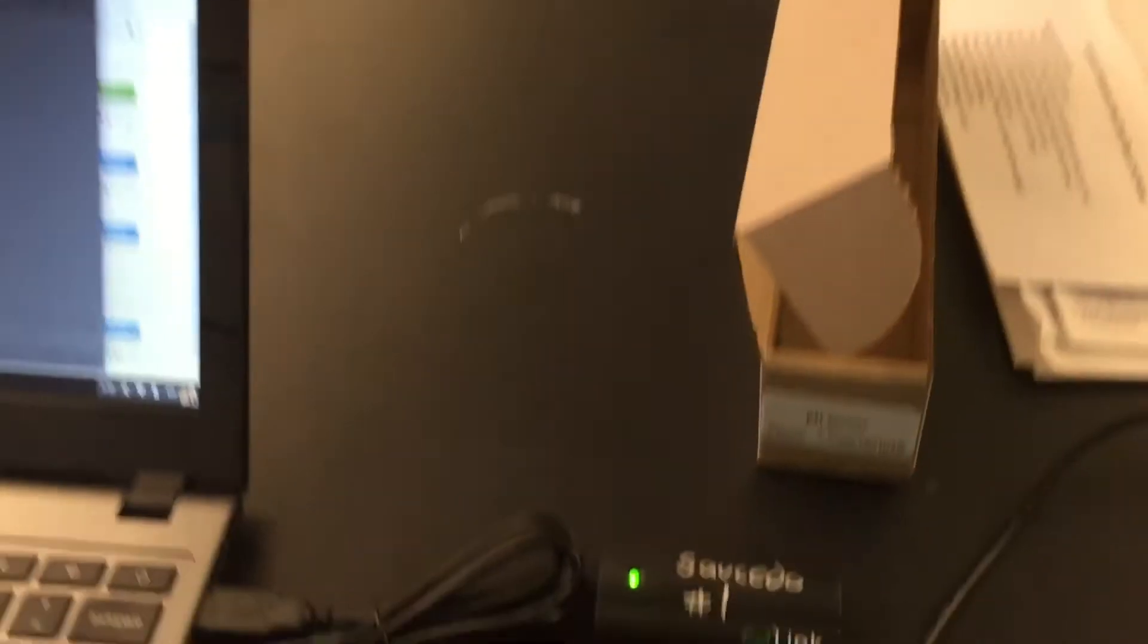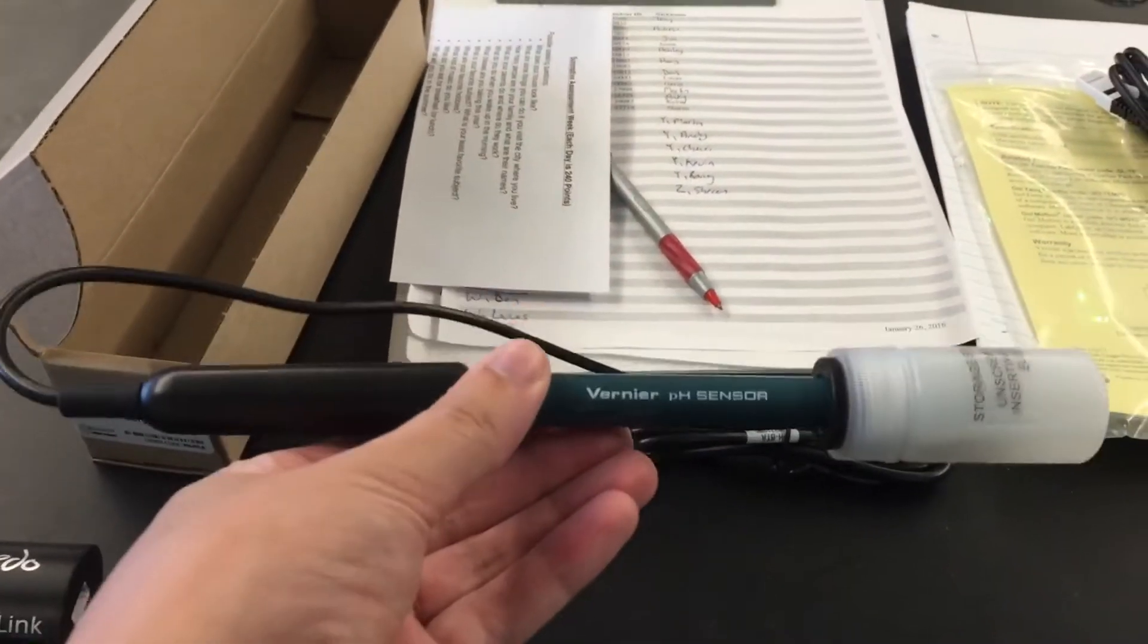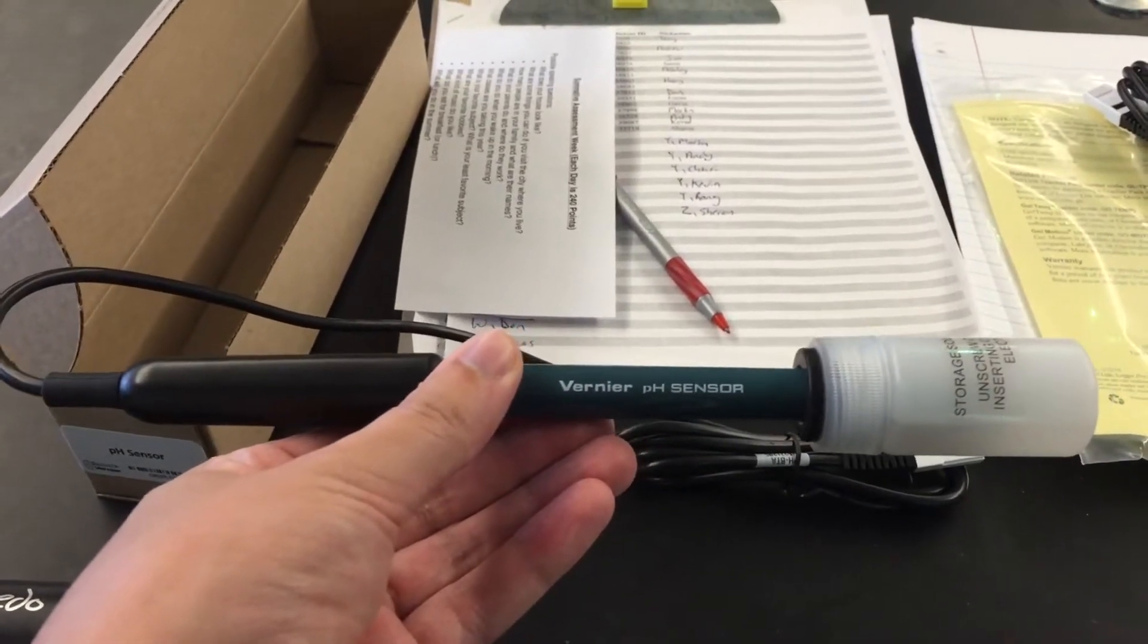In order to use a pH probe you need a Golink cable connected to your Chromebook and then this item itself is the actual pH probe.